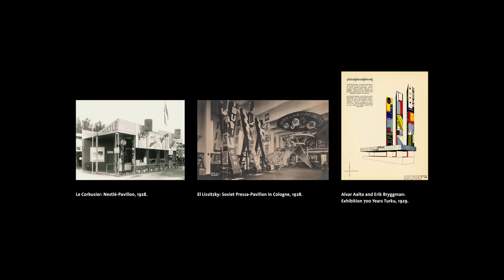Also the other exhibition pavilions they see, or plans for pavilions. Le Corbusier's Nestlé Pavilion from 1928, El Lissitzky's Pressa Pavilion in Cologne from 1928, and also Alvar Aalto's and Erik Bryggman's exhibition '700 Years of Turku.' The friendship between Asplund and Aalto has been fairly well covered — they knew each other, and Aalto knew of Asplund's designs for the Stockholm Exhibition, trying to be faster and incorporate many of the same ideas. You might really see Turku as the sister exhibition to Stockholm, just one year earlier and considerably smaller in scale.